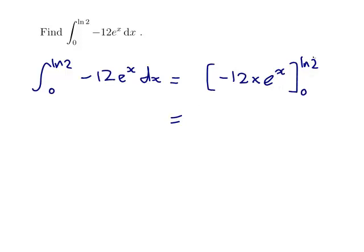Okay, so what I need to do is sub in ln 2 and sub in 0 and subtract. So -12 times e^(ln 2) minus -12 times e^0.